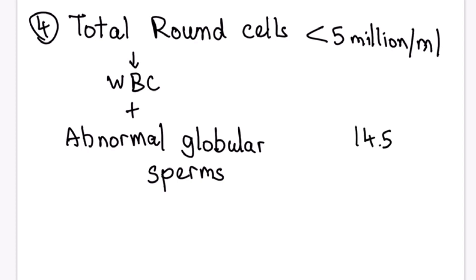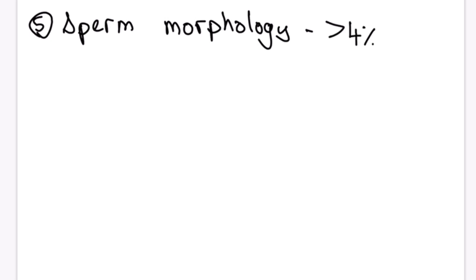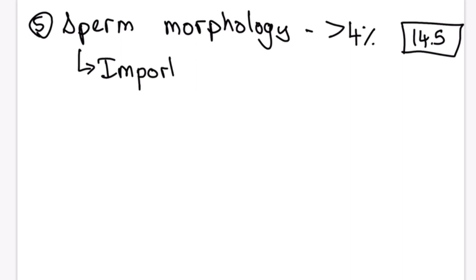Our number is 14.5, so all parameters come from within it. The fifth parameter is sperm morphology — among all the sperms, more than 4 percent should be of normal morphology. The 4 is found directly in 14.5, making this the most important parameter.